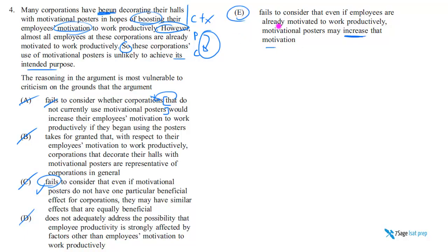E is the correct answer choice: fails to consider that even if employees are already motivated to work productively, motivational posters may increase that motivation. There you go — it's a very easy question. The wrong answer choices here are meant to illustrate lessons that are applicable to other questions that are far more difficult than this one.